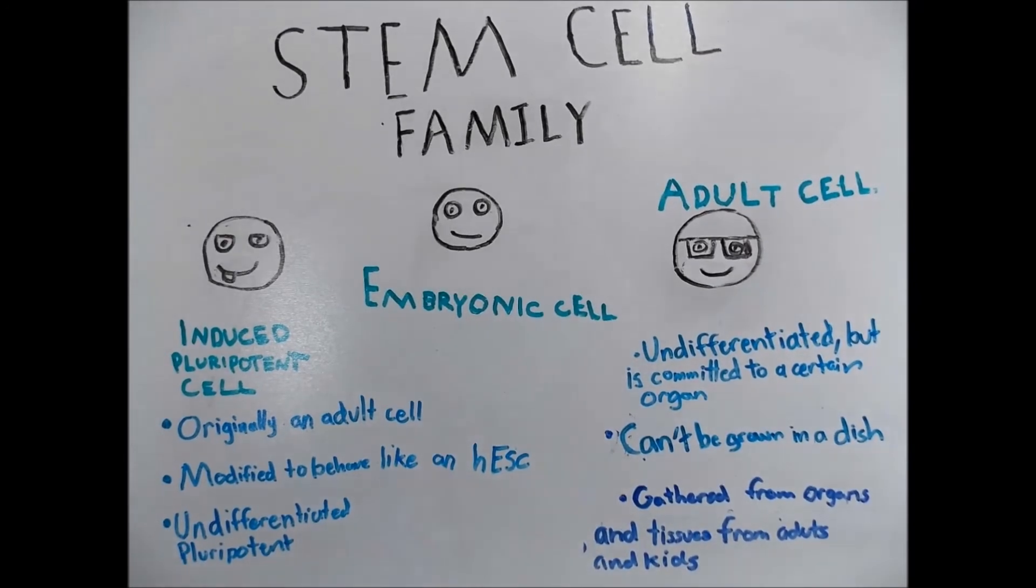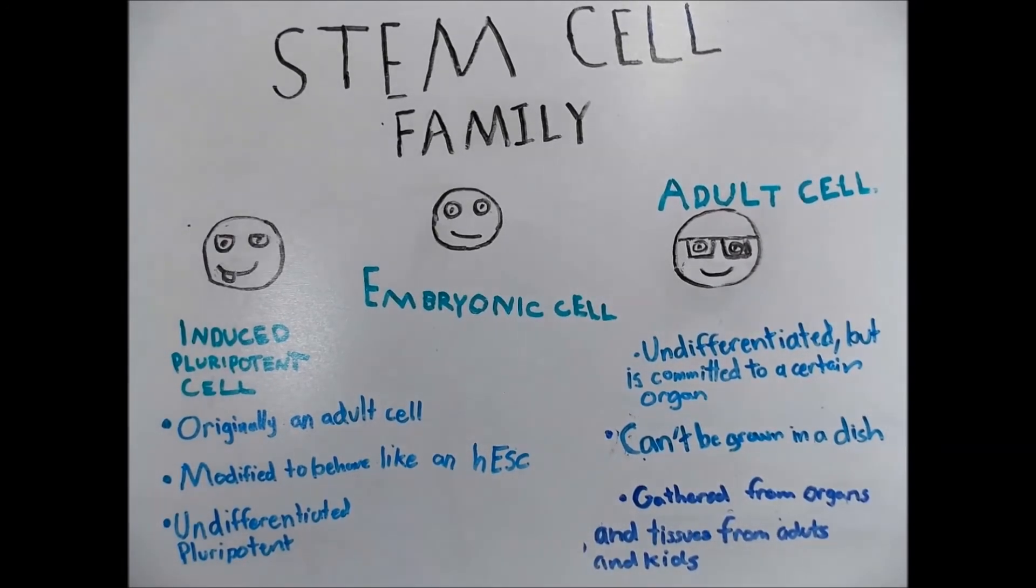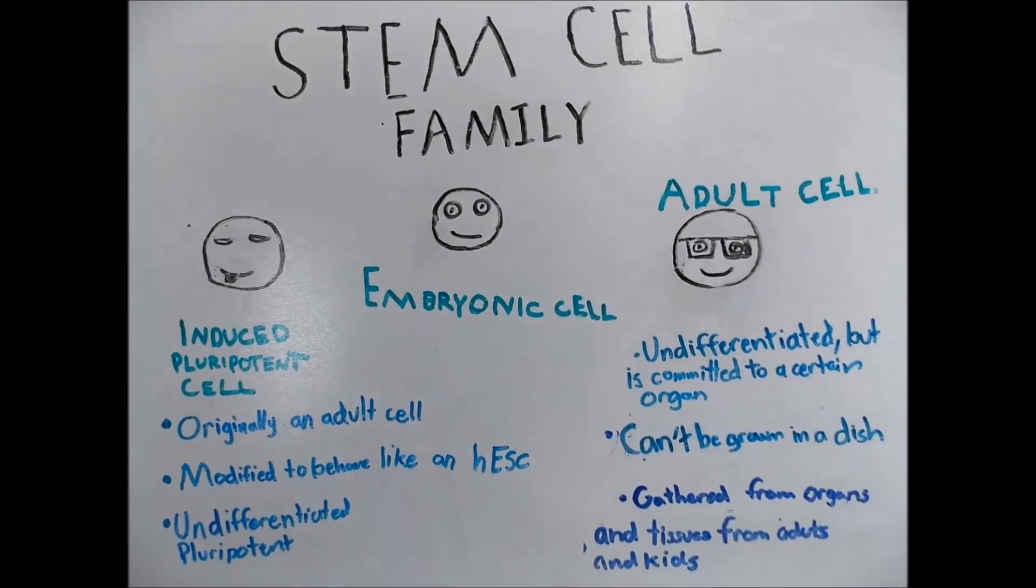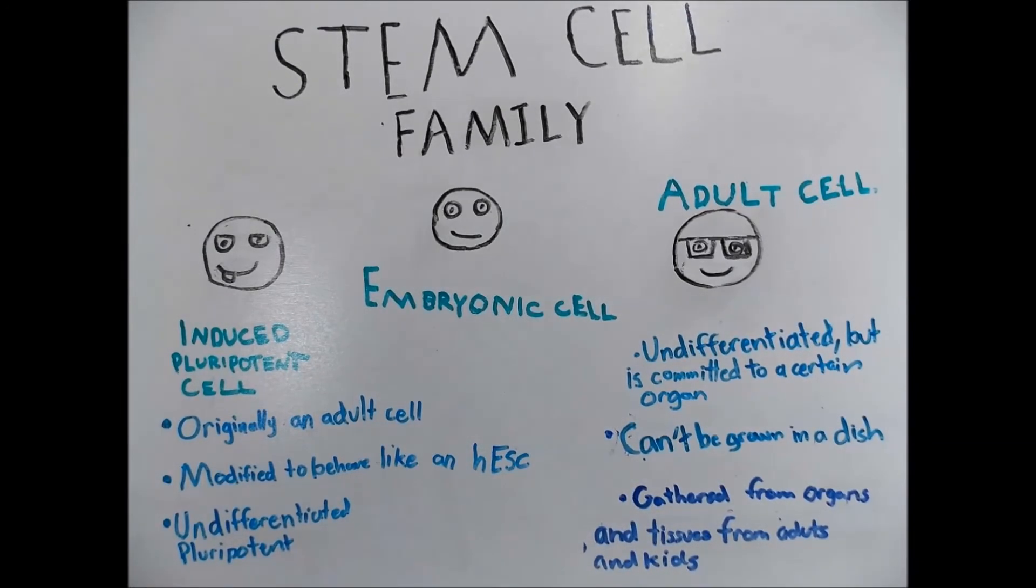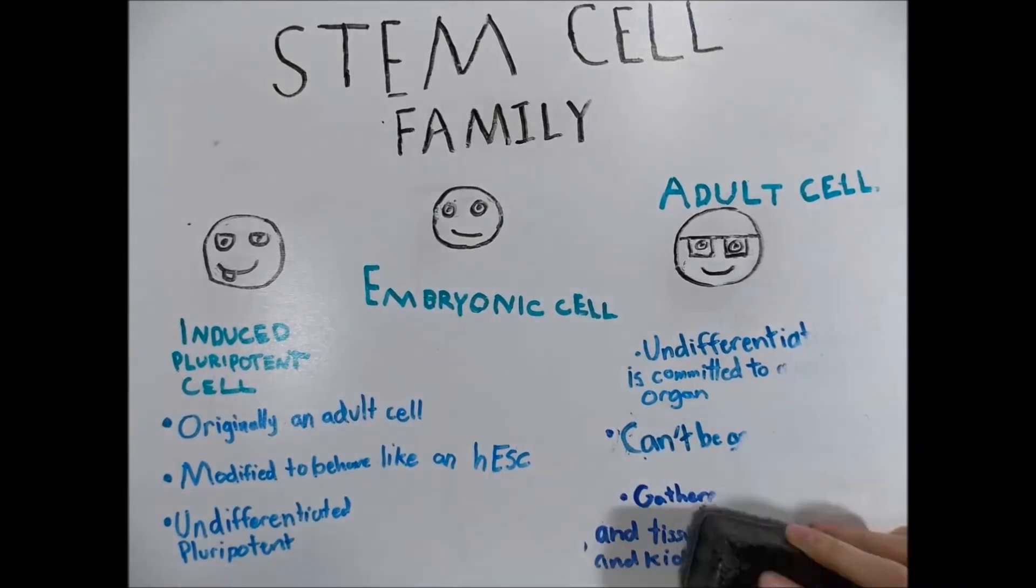Induced pluripotent is an adult cell, but has been genetically modified with embryonic genes to behave similar to HESC. First developed in 2007, it is unknown if it even differs clinically from HESC. After an induced pluripotent is reprogrammed, they may differentiate into any cell and is no longer committed to the certain structure.